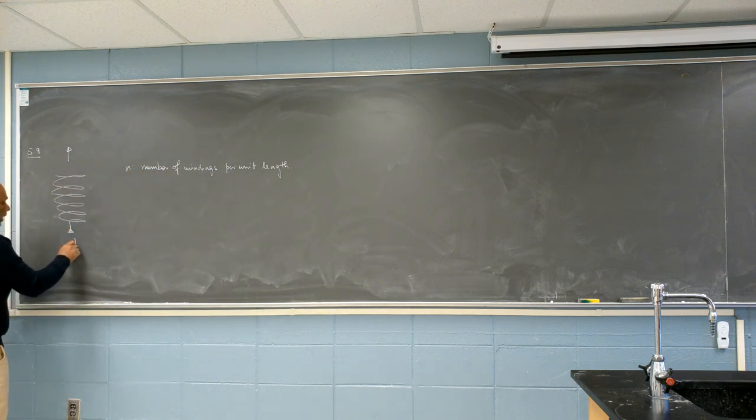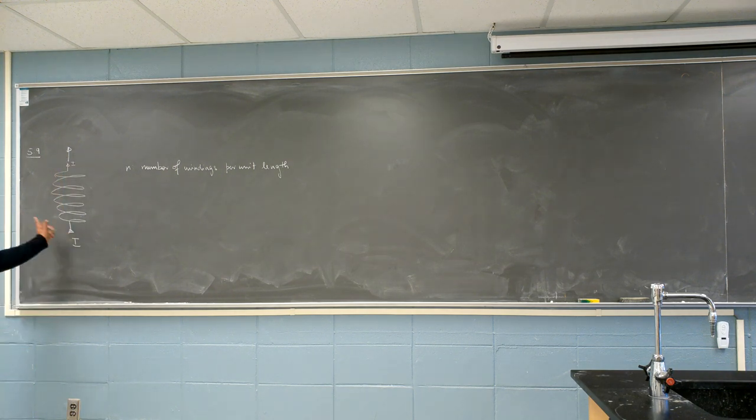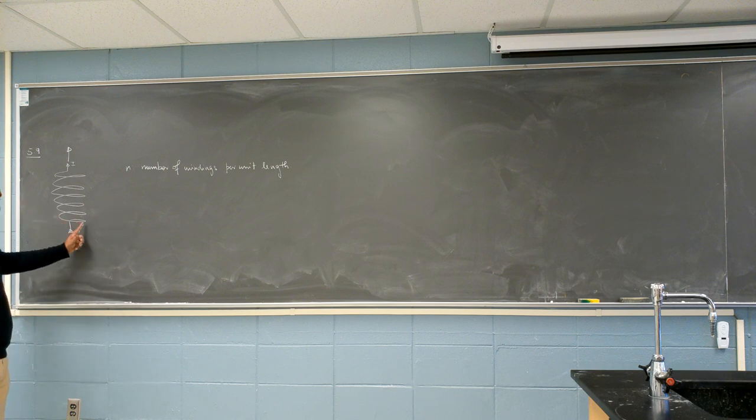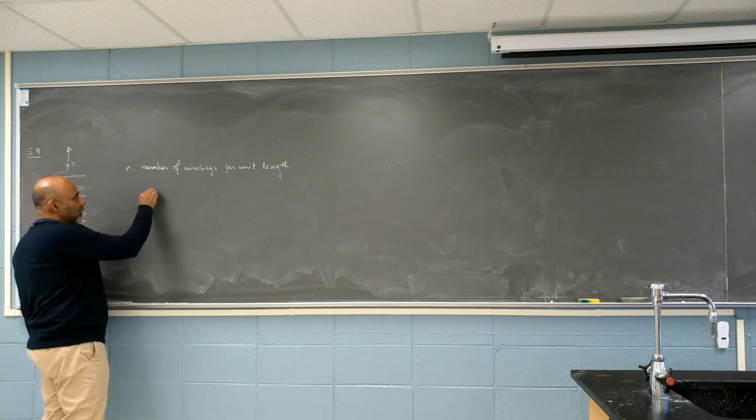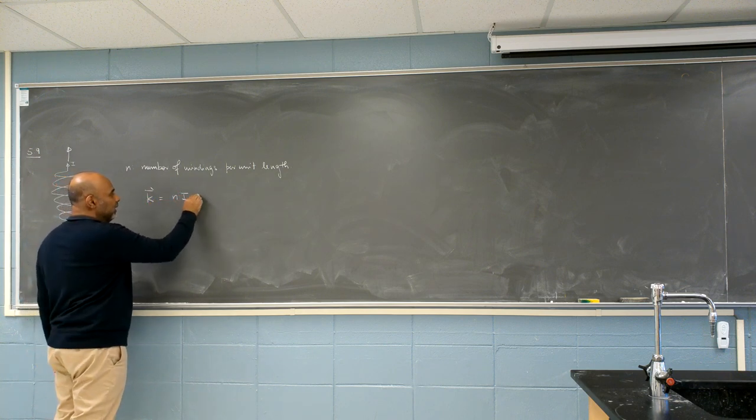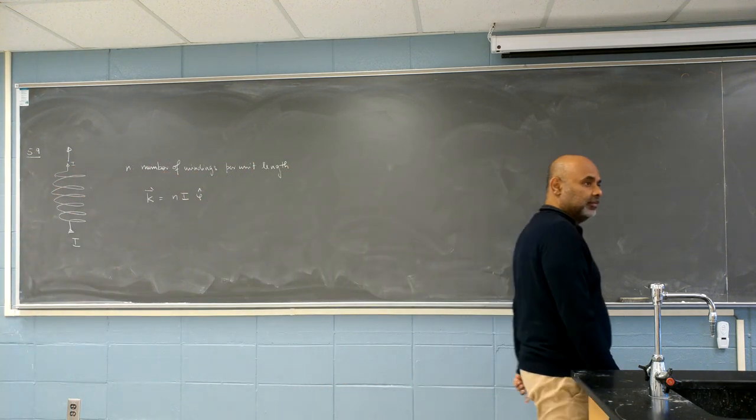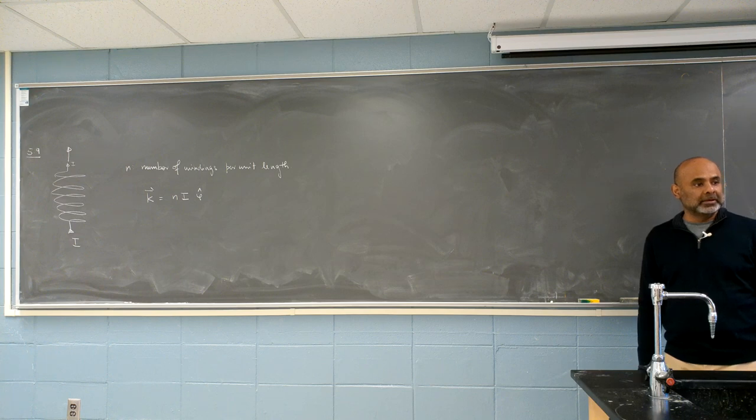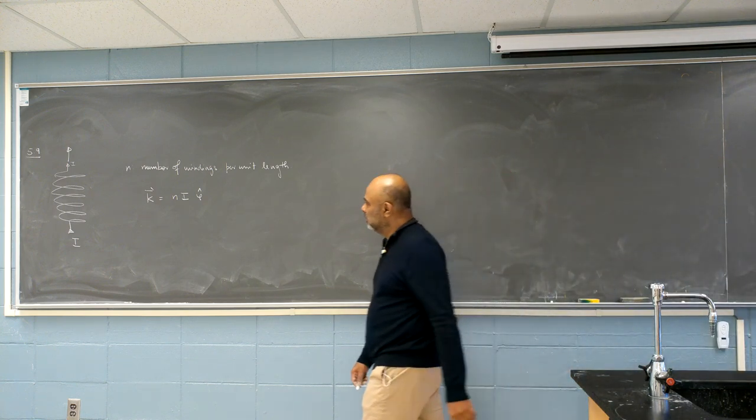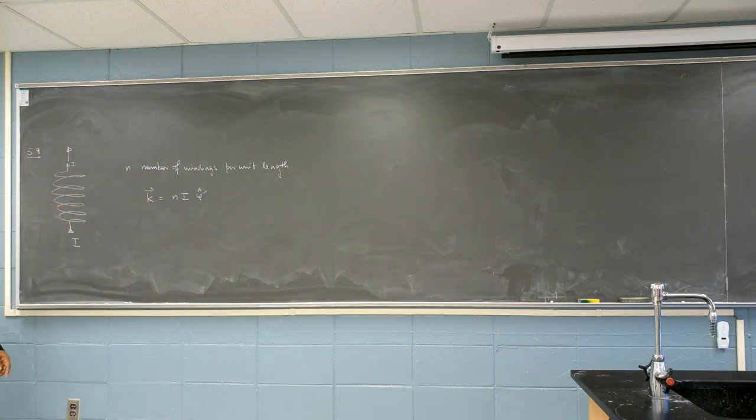Let there be a current I flowing through the solenoid. The winding is so tight that at any point, you can think of current just being a loop in that plane. So K is what? N times I phi hat. Correct? As a matter of fact, K is the source. And this is why I want to be pedantic with this example. It's not very difficult. So I'm going to put it as phi hat prime. It's a prime coordinate. It's a source. Right? Fine.